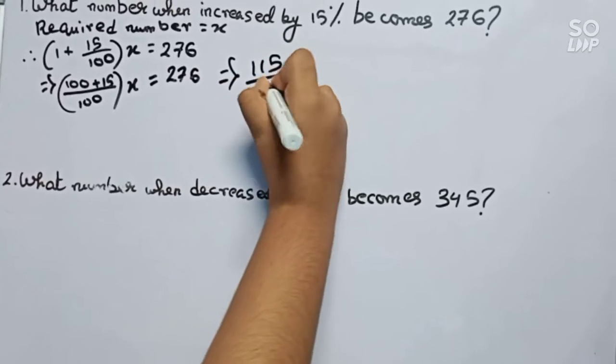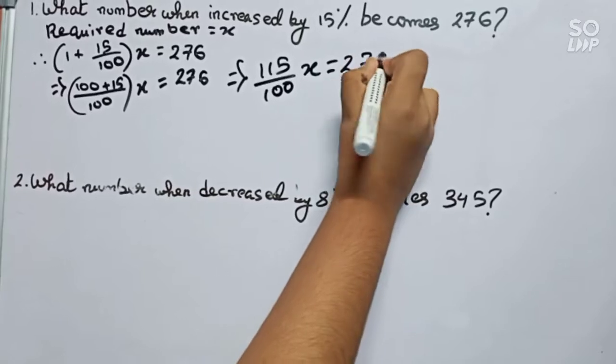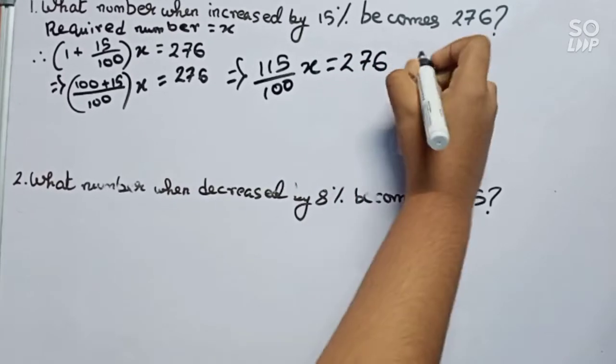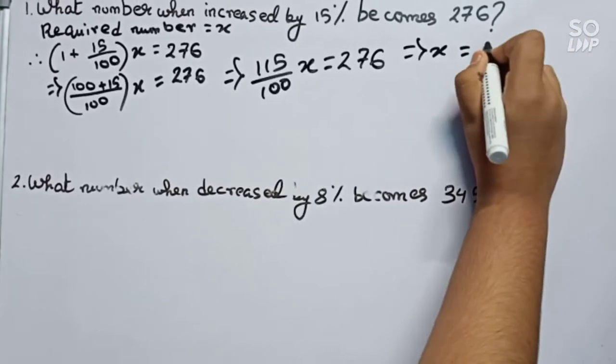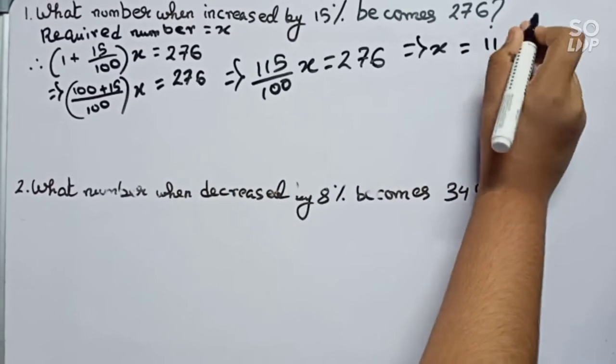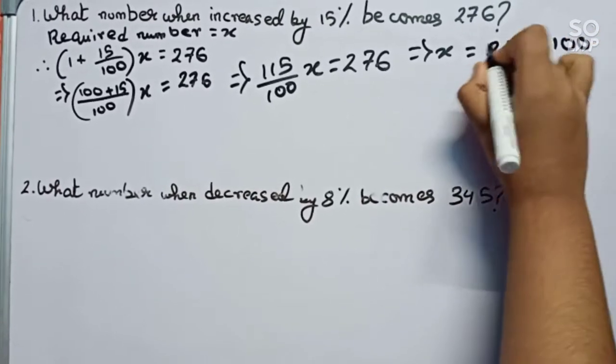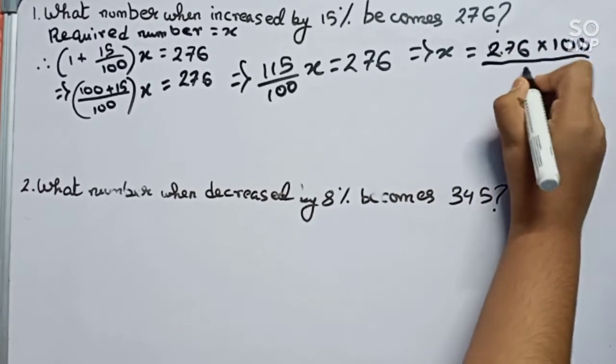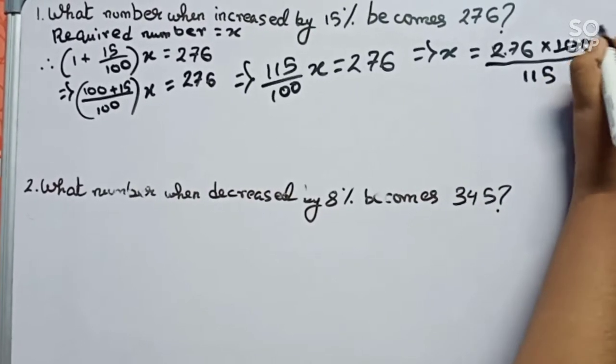It will become x equals to 276 times 100 divided by 115. First you cut 15 and 100 by 5 and 20.